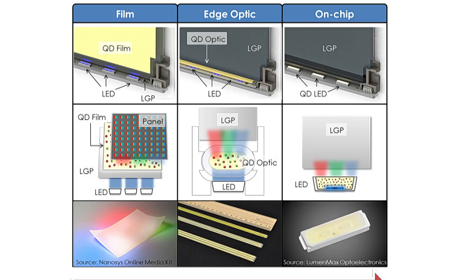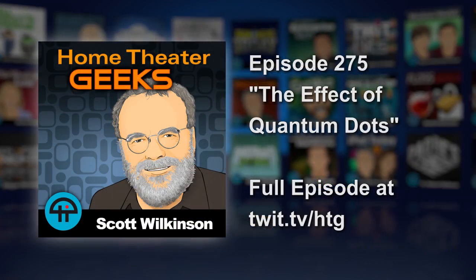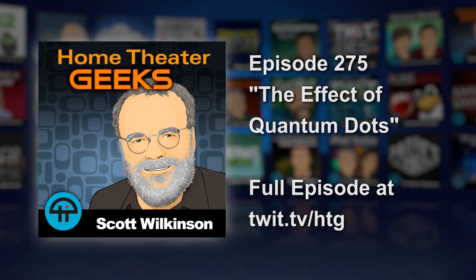So before the light gets redirected through the light guide plate, it has to go through this glass optic and get converted into green and red. Some of the blue goes through, and you end up getting RGB out the front. This is a much more materially efficient way to do it — we use about 40 times less quantum dot material. Our solution is generally about 1% of the retail price of your TV, so if it's a $1,000 TV, we're like a $10 add-on.